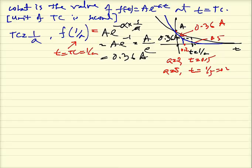Both graphs achieve the value 0.36A, but the graph with smaller time constant (0.2s, where a=5) achieves 0.36A at a much smaller value of t compared to the graph with time constant 0.5s (where a=2). A smaller time constant means the signal decreases faster.